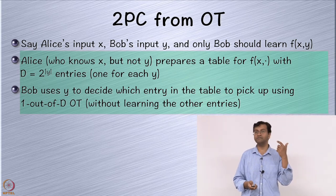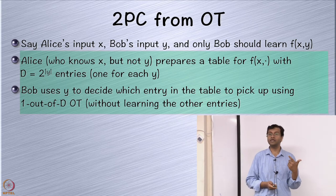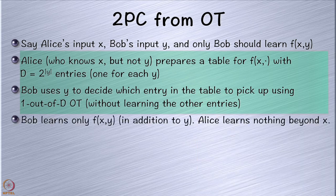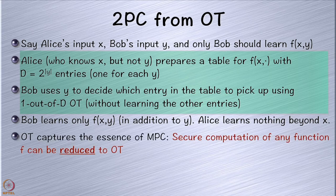Bob learns f(x, y) — from that he could make some deductions about x, but nothing more. Alice learns nothing because there's oblivious transfer — she doesn't know which one Bob picked up. Bob's view can be simulated just given the output from the ideal functionality — that's why this is secure. So you can compute any function f if you have a secure protocol for OT. Of course it came with caveats: it's secure only against passive corruption, and it doesn't scale well.